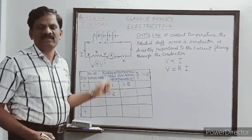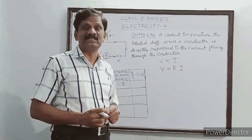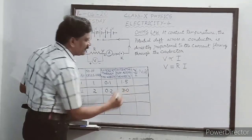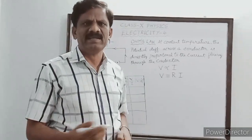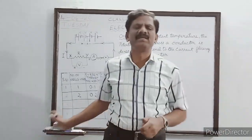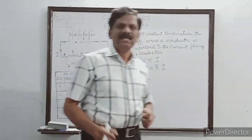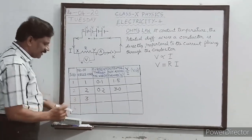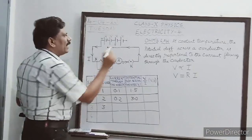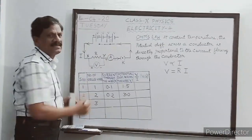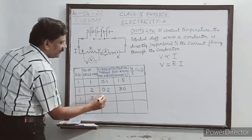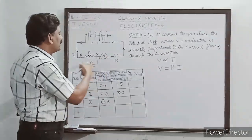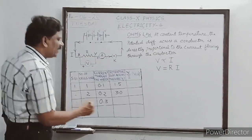For example, with two cells, the current flowing through the circuit is double, that is 0.2 ampere. Then naturally the potential difference across the resistance should also have increased. As measured by the voltmeter, I will take that it is 3.0 volt. Next, with three cells, the current passing through the resistor is 0.3 ampere and the potential difference is 4.5 volt.